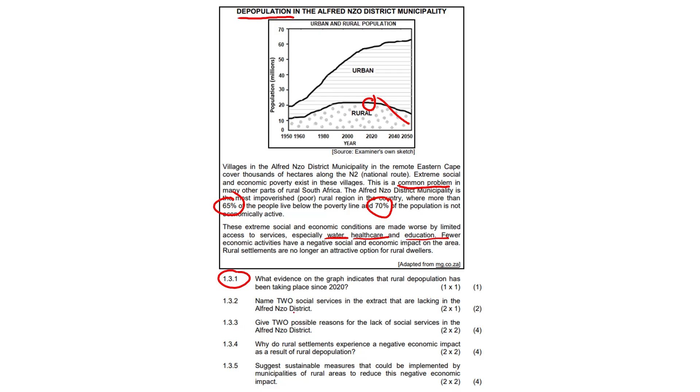1.3.3 Give two possible reasons for the lack of social services in the Alfred and Zor district. There are quite a few here. Maybe there's simply insufficient municipal budgets, or in other words, just no money. Poor infrastructure, that's always one to have in your back pocket. It's relatively generic. And lack of skilled professionals. Also anything along the lines of corruption, theft, vandalism would have scored the mark.